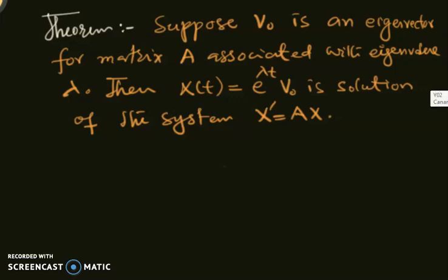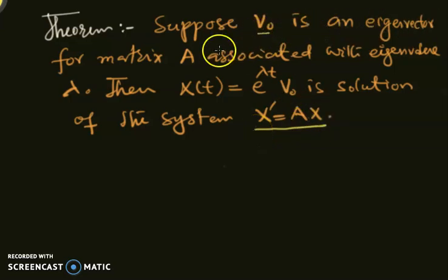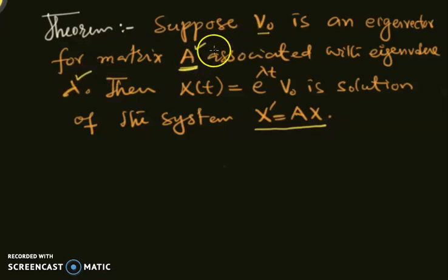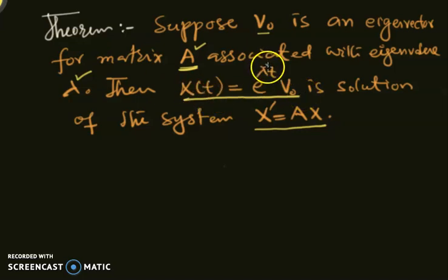Bismillahirrahmanirrahim. Here is an interesting theorem about how to find the solution of planar systems of the form x' = Ax. It says: suppose v0 is an eigenvector for matrix A associated with eigenvalue lambda. Then x(t) = e^(lambda·t) · v0 is a solution of the system. If you know the eigenvalue and the eigenvector, just compute this quantity and it will be the solution.